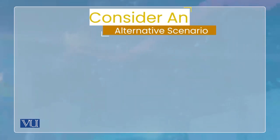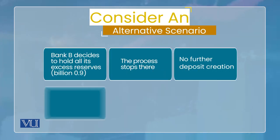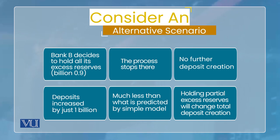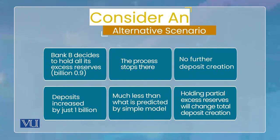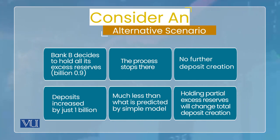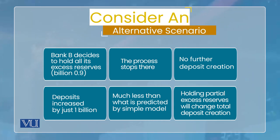Now the second alternate scenario: Bank B decides that instead of lending out the 0.9 billion rupees of excess reserves, it will hold them as excess reserves. Once Bank B holds excess reserves, lending stops. When lending stops, no amount goes to Bank C in the sequence, so Bank C cannot create deposits — D cannot, E cannot — the entire process stops at Bank B itself. No further deposit creation.